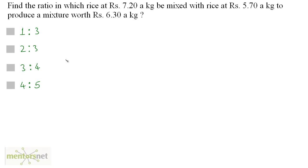Find the ratio in which rice at Rs.7.20 a kg be mixed with rice at Rs.5.70 a kg to produce a mixture worth Rs.6.30 a kg. This question asks for the ratio of the quantity of the costlier rice to the quantity of the cheaper rice — that is, rice at Rs.7.20 a kg to rice at Rs.5.70 a kg.